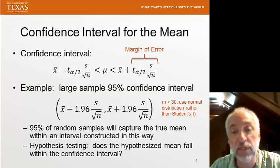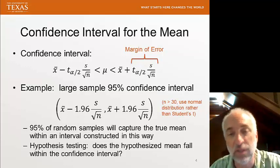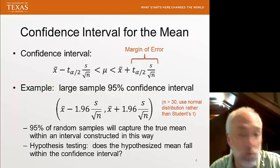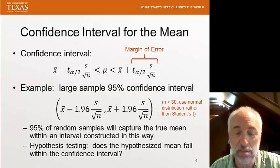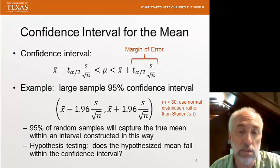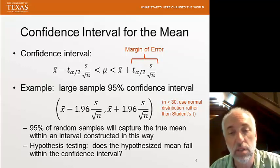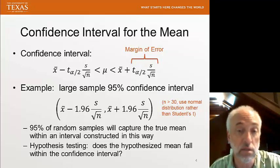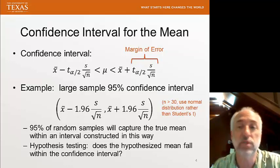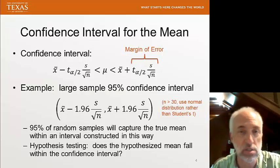We could also do hypothesis testing, and especially for two-tailed hypothesis testing, there's a very easy relationship between confidence interval and the hypothesis test. Does the hypothesized mean fall within the confidence interval? Does the null hypothesis mean fall within the confidence interval? If it does, then we cannot reject the null hypothesis. If it doesn't, then we could reject the null hypothesis in favor of the alternative hypothesis that the mean is different. That's a review of what we've discussed so far about inferences about the mean.